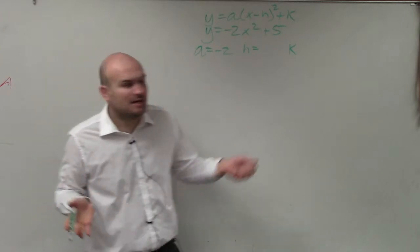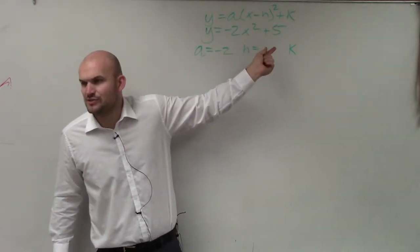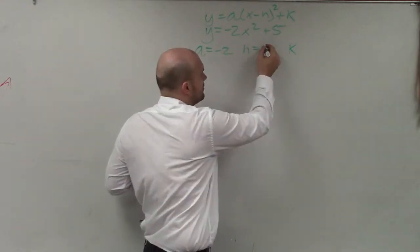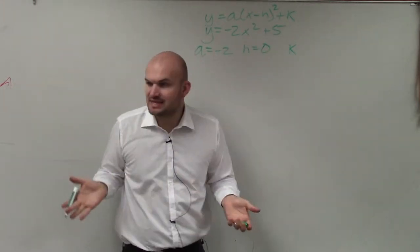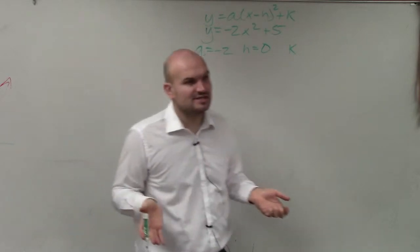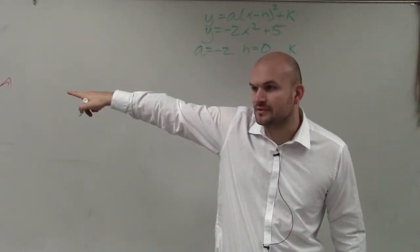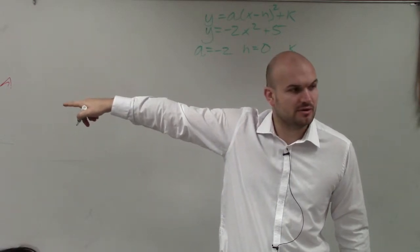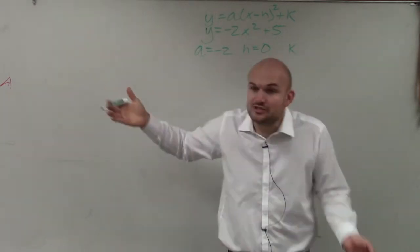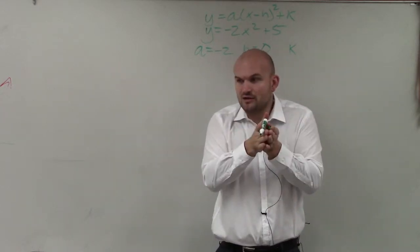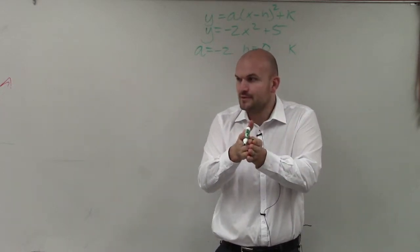My h, you guys can see, do I have any parentheses of x minus or x plus anything? No, right? So therefore, my h is 0. It's non-existent. I do not have an h. So if my h is 0, let's look back. What does h do to our graph? It's a horizontal translation. So if h is 0, that means the graph is not going to shift left or right at all. It's just going to stay put.